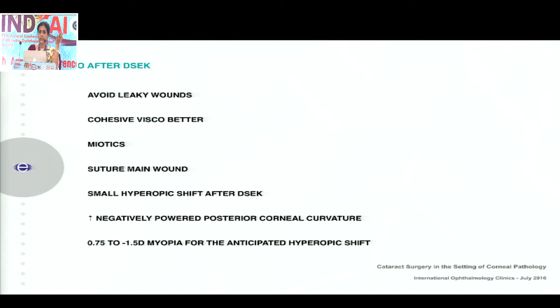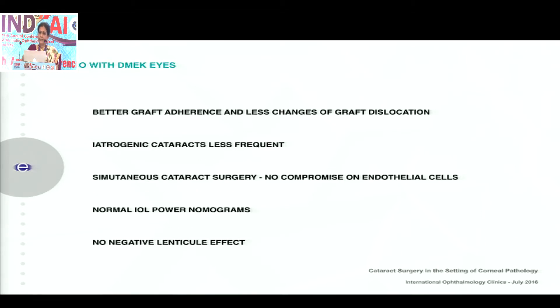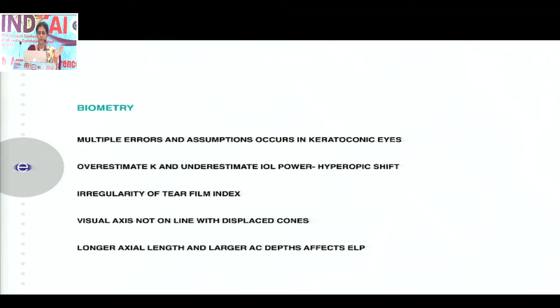If you're doing phacoemulsification in an eye that has had a DSEK, again you need to avoid leaky wounds and use cohesive viscoelastic. The key point is that because you've injected a lenticule in the eye earlier, the posterior corneal curvature is more negatively powered. So you need to do your biometry such that the patient is left with 0.7 to 1.5 diopters of myopia to compensate for the hyperopic shift that occurs from injecting a lenticule. There is no challenge of astigmatism in these eyes. If it's a larger graft, the hyperopia is greater, so a toric IOL is eminently possible. In a DMEK eye, the negative lenticule effect is not there, so you could use normal IOL nomograms and do a careful surgery as expected.